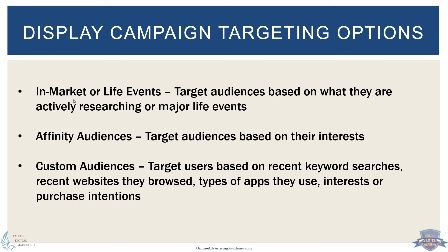There is an option called in-market or life events. This targets users based on what they're actively researching or major life events — so if they're in the market to buy a new house or car, or they had a major life event such as recently getting married. Again, Google is guessing based on browsing history and different activities. In-market is fairly accurate, but life events Google is doing its best to guess. So these aren't perfect, but in-market is usually a pretty good option.